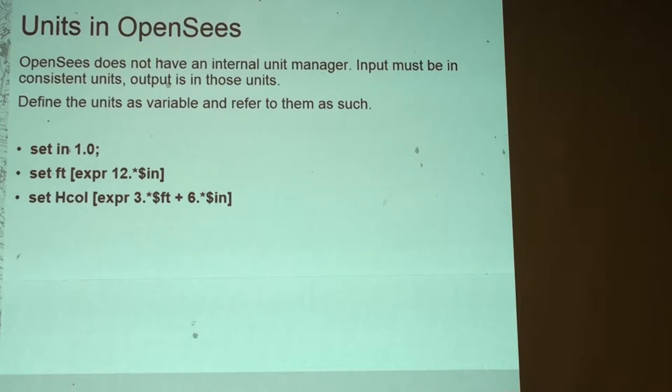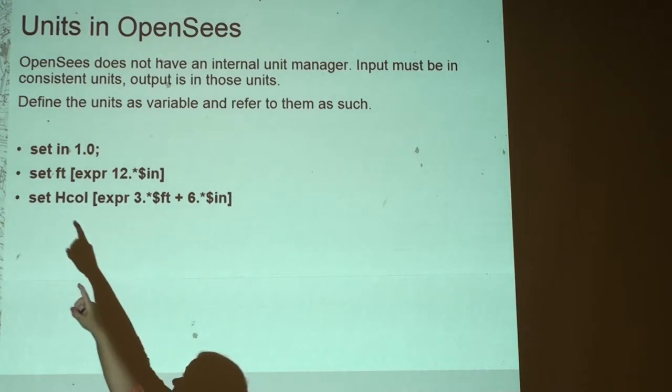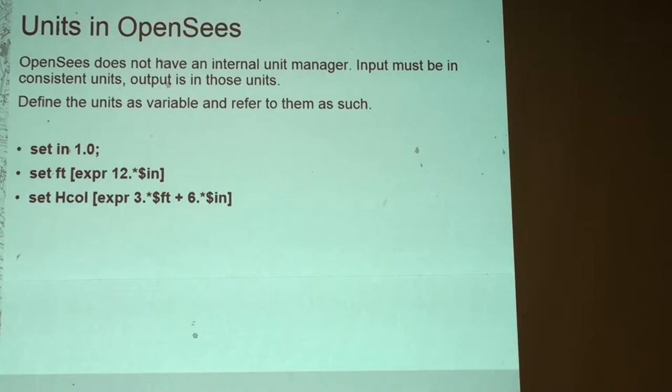The way I get around it for my input is I just play with the whole variables concept. So I define, if I want my basic units to be inches, then I say set inches equal to one. And then I say feet equals 12 times inches. So when I define the column width to be equal to three feet and six inches, it's going to say three times the value of feet, which is 12, plus six times the value of inches, which is one. And that's going to give me the answer in inches.